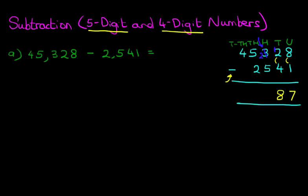We're now on to the hundreds column. We've got 2 minus 5. We cannot do this because 2 is smaller than 5, so we're going to take one from the thousands column — the 5. Let's cross out the 5; 5 minus 1 is 4. The one we have taken away, we add to the hundreds column, so the hundreds column has now become 12 minus 5. 12 minus 5 is 7. Now the thousands column: 4 minus 2 is 2. And lastly, the ten thousands: 4 minus 0 remains 4. Therefore, the answer to the question is 42,787. We get a nice big tick.